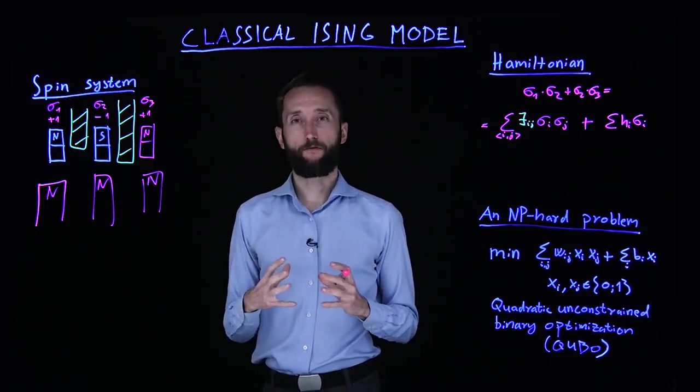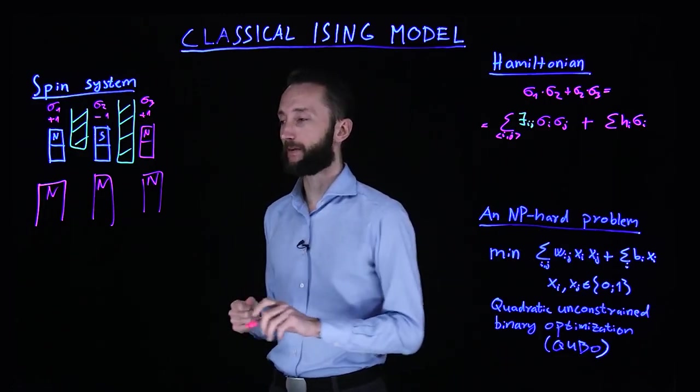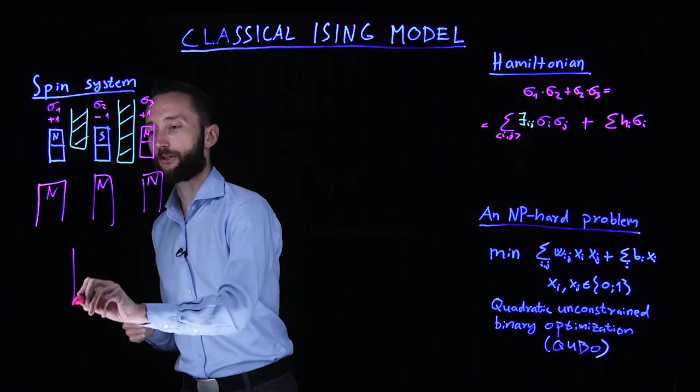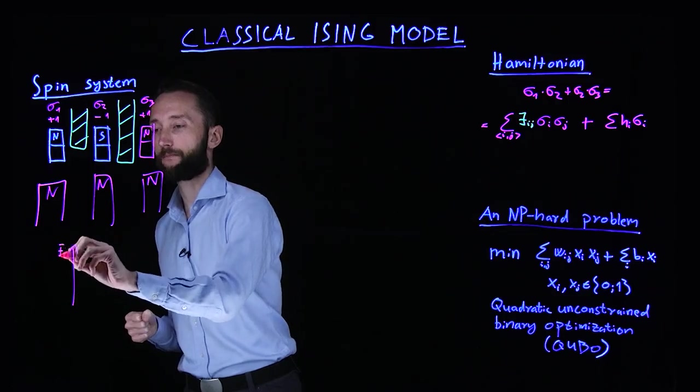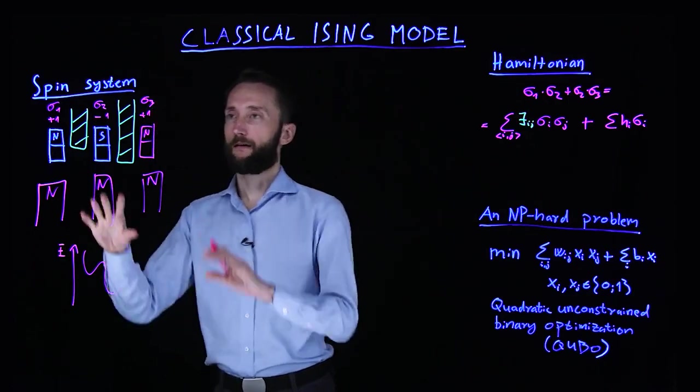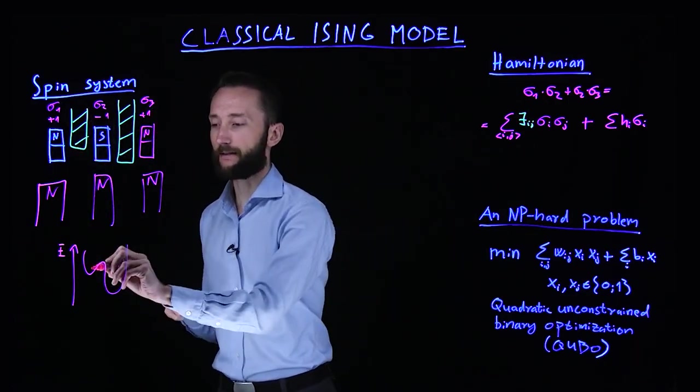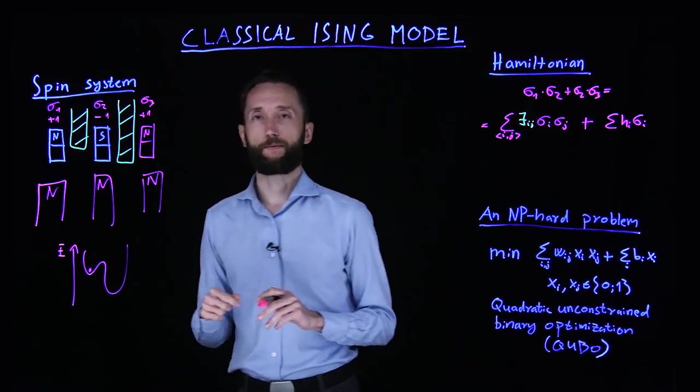So this is actually a very hard problem to solve for nature. Because what happens is that if you look at the energy landscape of this problem, and what can happen is that, for instance, the magnets naturally align, they flip, but they might get stuck in some local optimum.